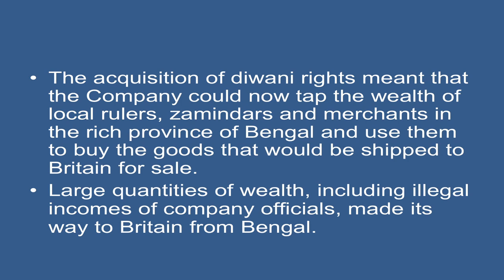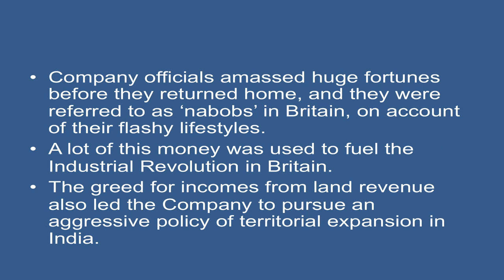The acquisition of Diwani rights meant that the company could now tap the wealth of local rulers, zamindars, and merchants in the rich province of Bengal, and use them to buy goods that could be shipped to Britain for sale. Large quantities of wealth, including illegal incomes of company officials, made their way to Britain from Bengal. Company officials amassed huge fortunes before returning home and were referred to as Nawabs in Britain on account of their flashy lifestyle. A lot of this money was used to fuel the industrial revolution in Britain.